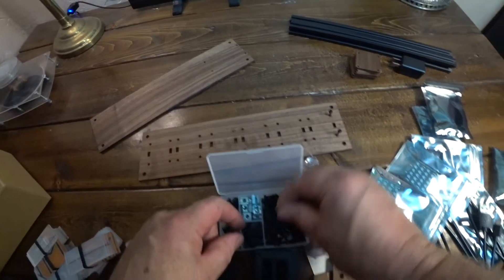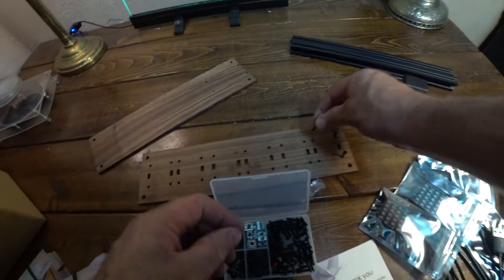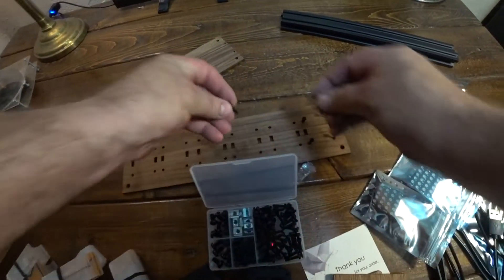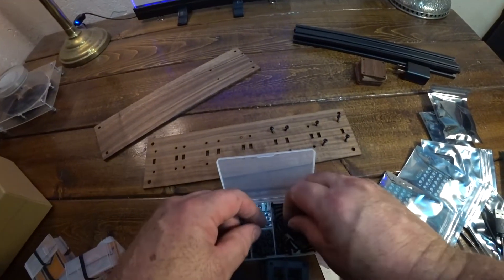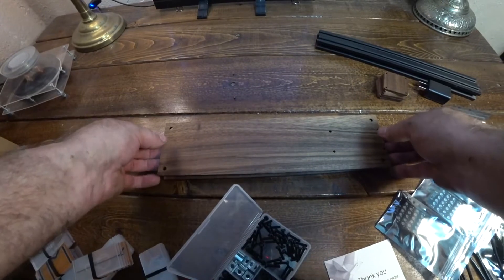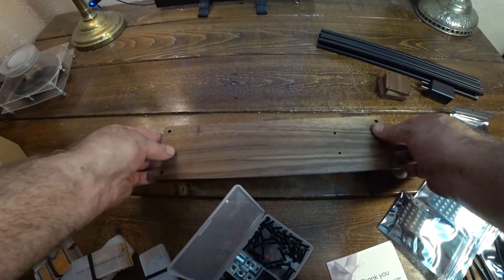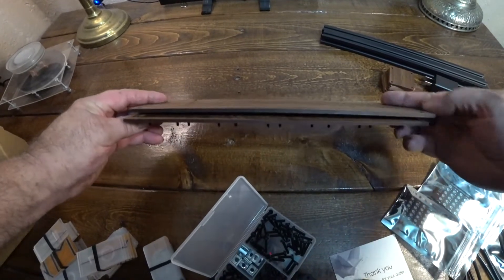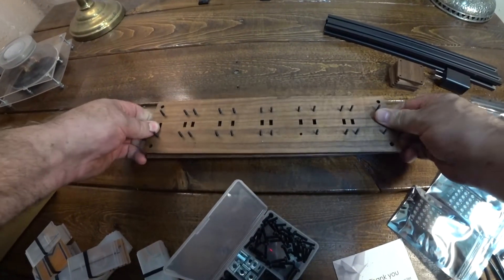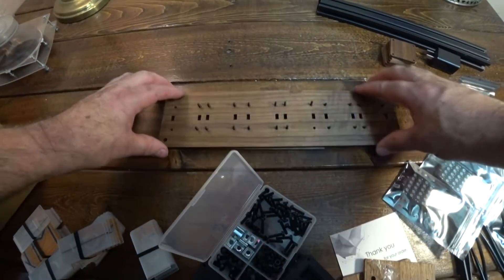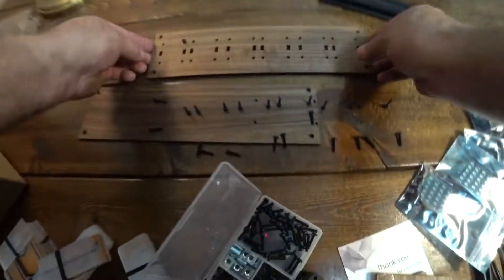What you got to do initially is these approximately one-inch bolts, put all them in this piece of walnut. Then what we're going to do is just take this other plate, put it over. Put it down so they fall through. Flip it over like so.